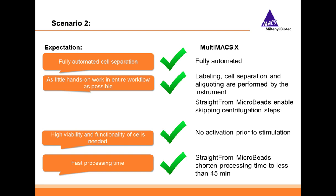Looking at the scenario 2 expectations met by the MultiMACS X: fully automated cell separation — the process is now fully automated. As little hands-on work as possible — the labeling, cell separation, and aliquoting are all performed by the instrument, and the straight-from microbeads enable skipping centrifugation steps. High viability and functionality — we've seen there is no pre-activation of cells prior to stimulation. And fast processing time — straight-from microbeads shortened the processing time to less than 45 minutes.